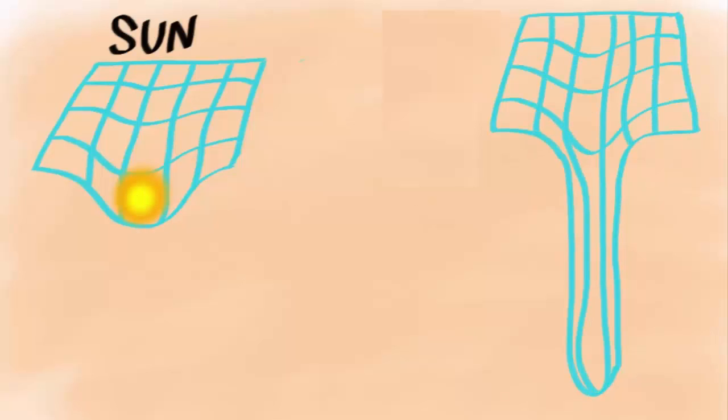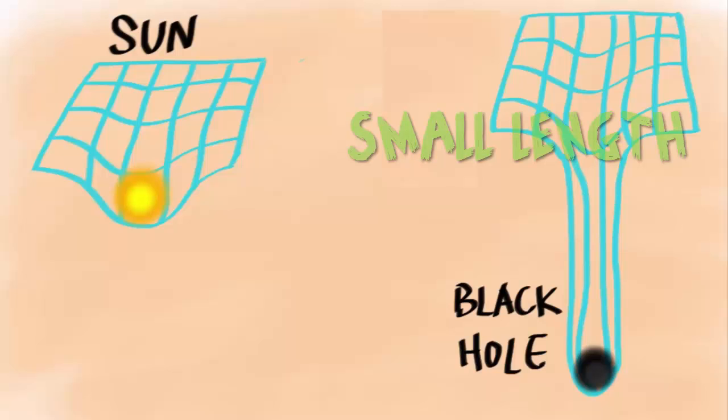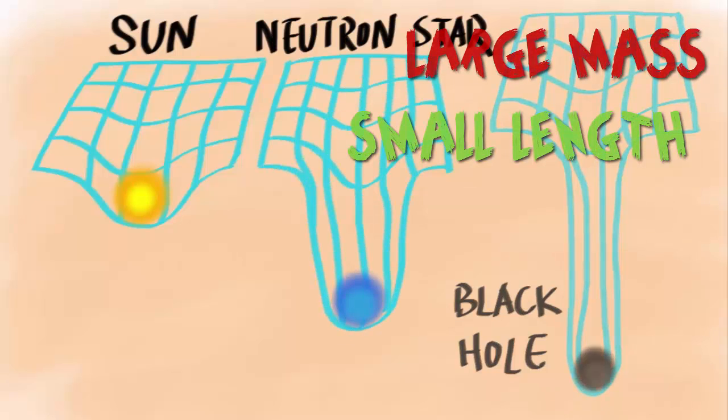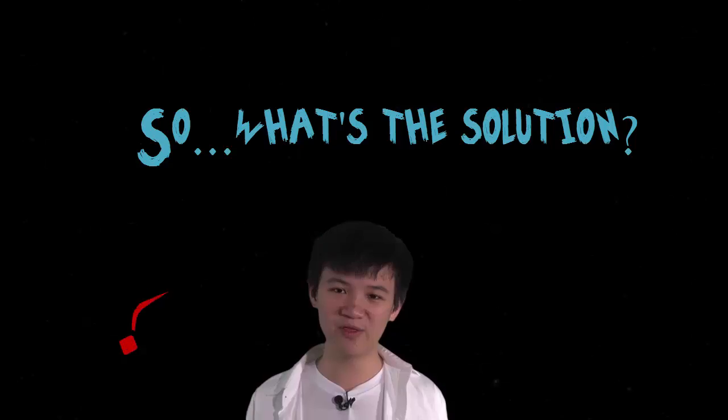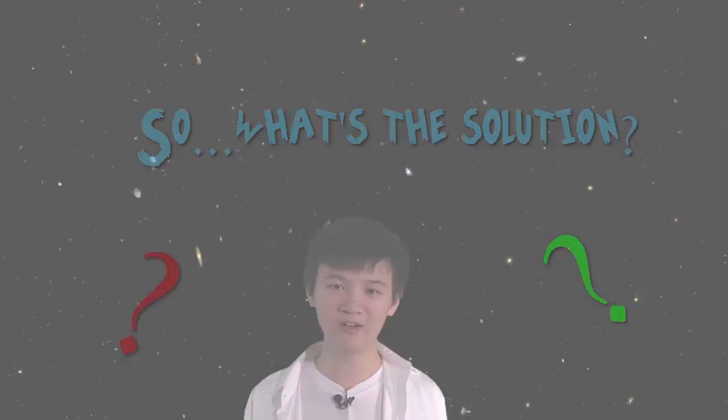It is because there are some cases in which both theories apply, such as in a black hole. The size of a black hole is small in terms of length, but the size is large in terms of mass. So we need both theories. So, what's the solution? Well, we need a theory of everything. And Einstein started on this with his unified model.